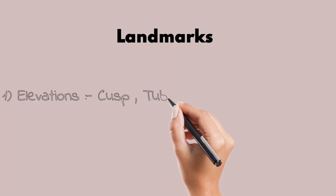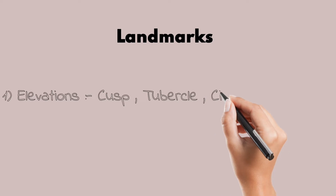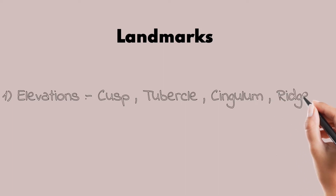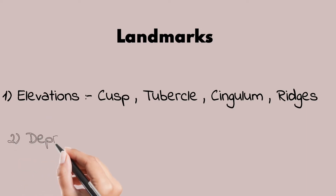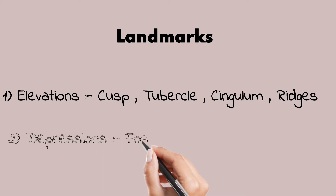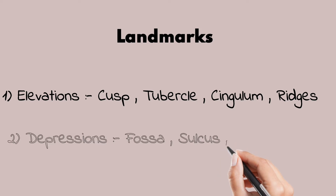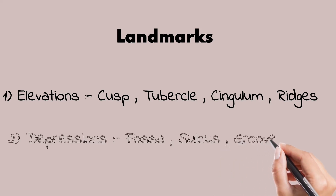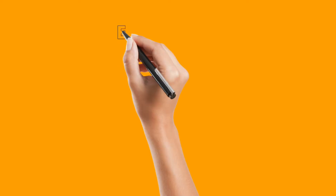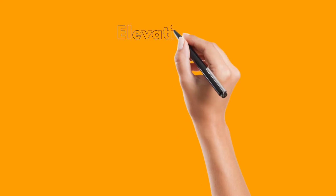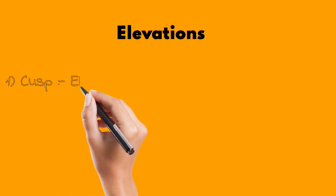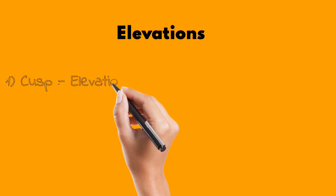Elevations are of four subtypes: cusp, tubercle, cingulum, and ridges. Cusps are the elevations or mounts on the crown. Tubercles are smaller than cusps and are similar to them, but they are formed by the extra formation of enamel.